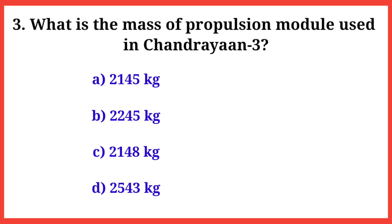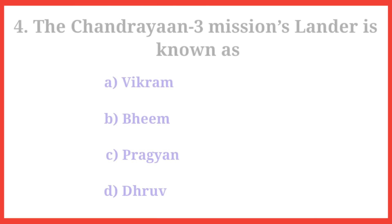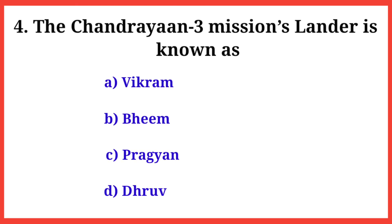Q3. What is the mass of the propulsion module used in Chandrayaan-3? The right answer is option C: 2148 kilograms.